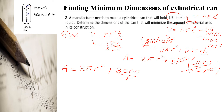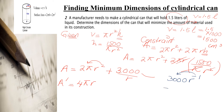Now you have the constraint equation and are ready to take the derivative. A prime equals — the derivative of 2πr² gives 4πr. For the 3000/r term, bring r to the top as r to the negative 1, and take the derivative to get negative 3000 times r to the negative 2. Bringing r to the power negative 2 into the denominator gives A′ = 4πr − 3000/r².